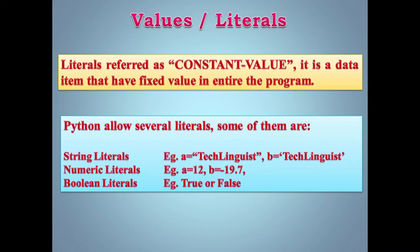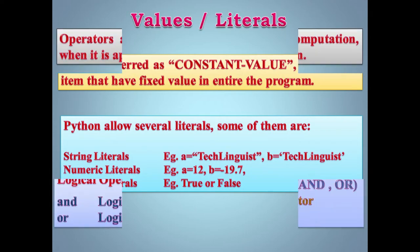Boolean literals kya hote hain? Boolean mein bas do hi values rehti hain — True aur False. Unhe hum log boolean values bolte hain. So a = True — a mein save hoga True. Okay friends, ab chalte hain next section mein — Operators.